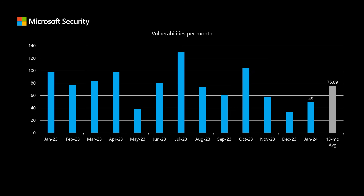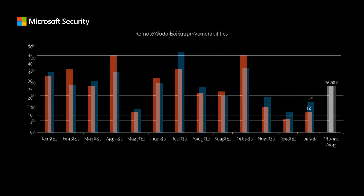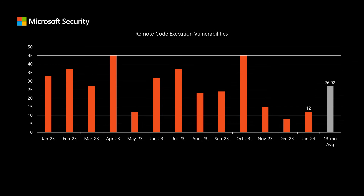Before I dig into today's release, I like to compare it to the previous 12 months to see how it stacks up. We've been averaging just under 76 total new CVEs in each release. This month, we have 49 newly disclosed vulnerabilities, quite a bit lower than what we've been seeing over the past year or so. And because there are fewer total vulnerabilities, we'll see a few lower numbers than we typically would.